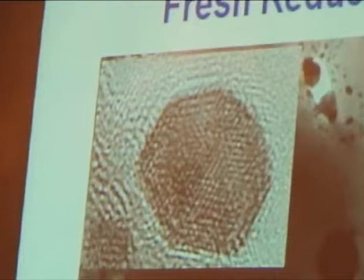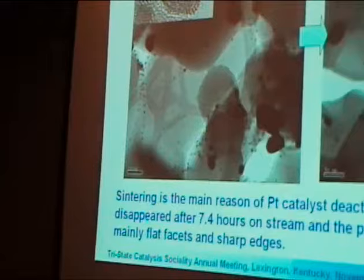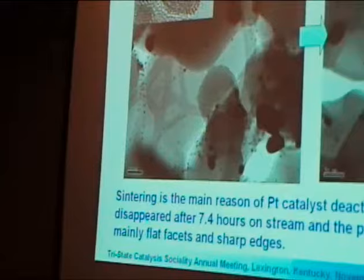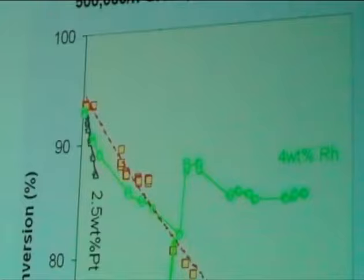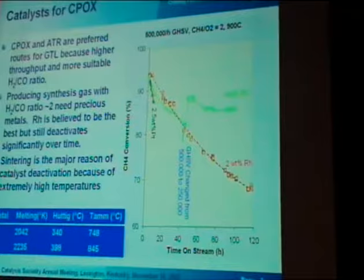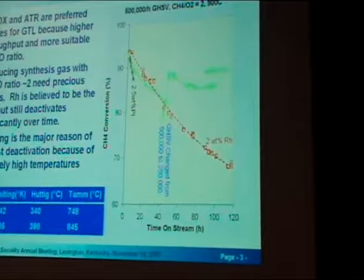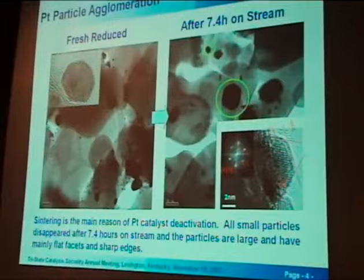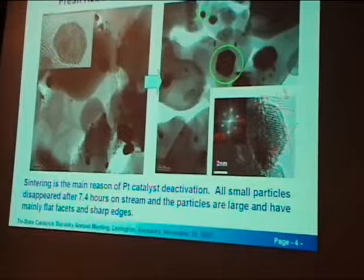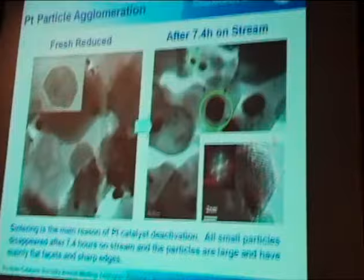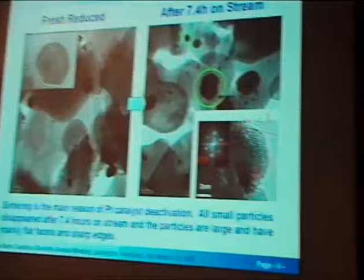Here I show you the platinum catalyst. Even when we disperse this catalyst relatively well with very small particles — though there are some large chunks — the particles are dispersed pretty well to start. I'm using TEM to look at the catalyst surface right before the reaction starts and also after reaction. For example, this platinum put on stream for 7.5 hours — most of the small particles have gone. Sintering is the problem. Eventually you get a lot of big particles with a faceted crystal surface, which is not really good.